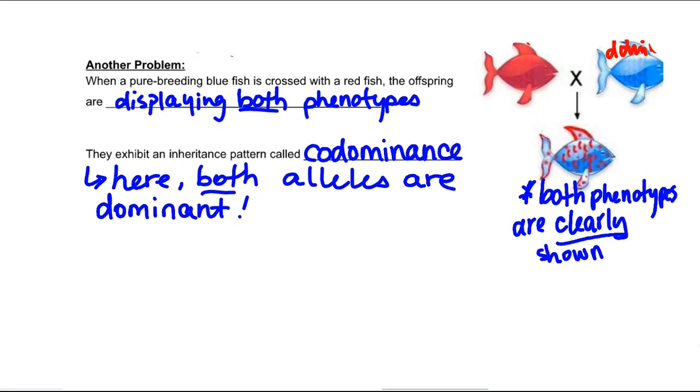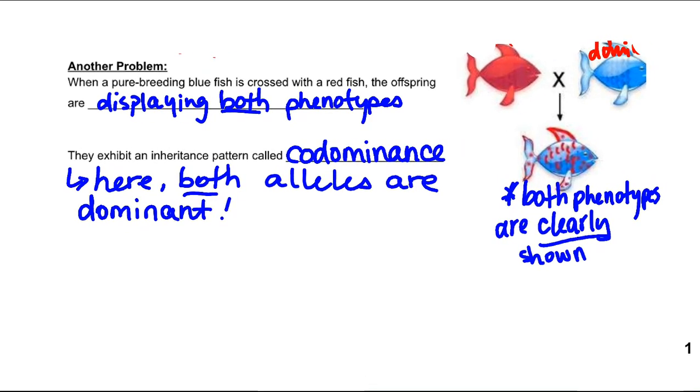So, another aspect of this lesson that I want you to take away from this video is that with incomplete dominance where we formed a new phenotype, we also have an aspect of dominance where both phenotypes are displayed. In the case of a red fish and a blue fish forming an offspring, we have a fish with red and blue aspects. Both phenotypes are clearly shown.